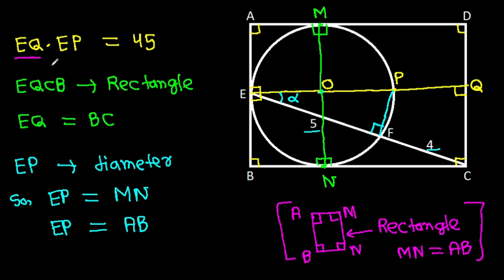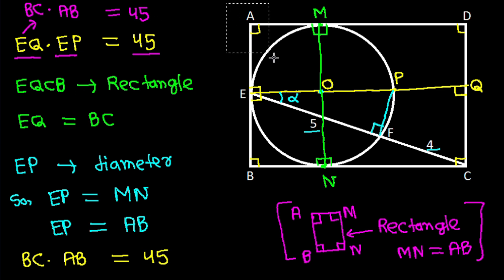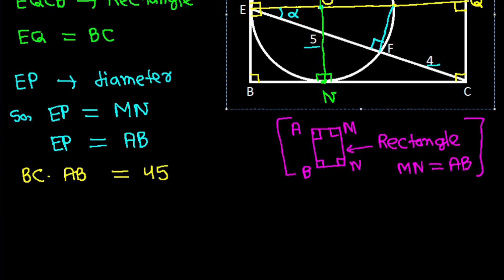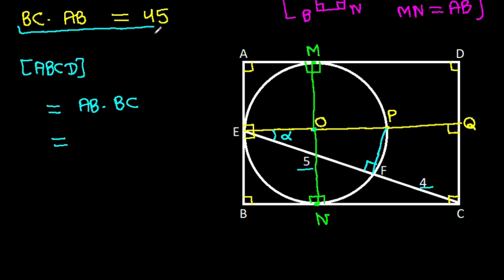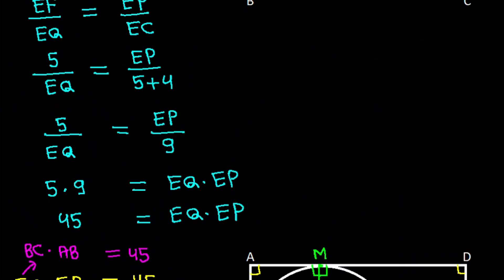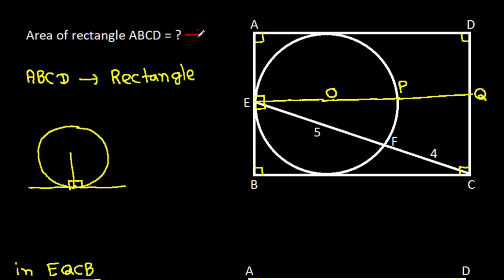We have EQ times EP equals 45, and since EQ equals BC and EP equals AB, we get BC times AB equals 45. So the area of ABCD equals AB times BC, which equals 45.